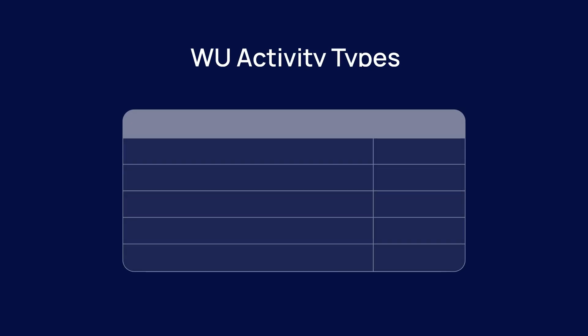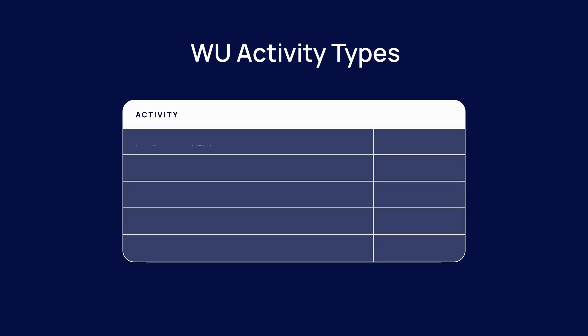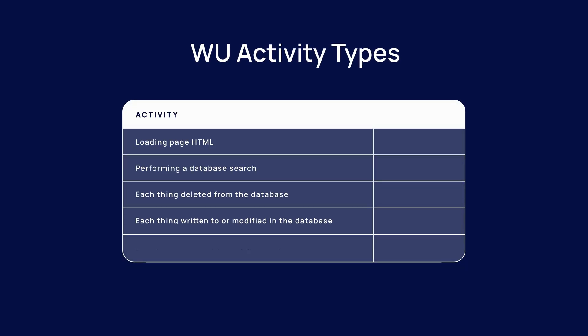Since every app is unique, this approach ensures a use-case agnostic way that lets you scale your app based on actual app consumption. Here is a brief list of activity types that contribute towards your workload usage.